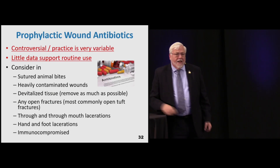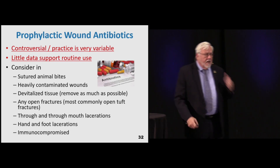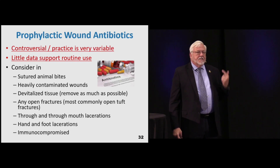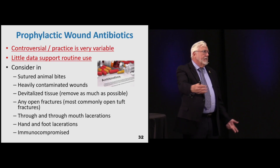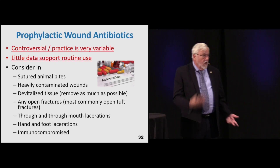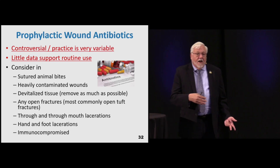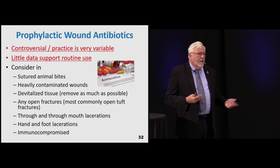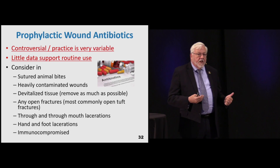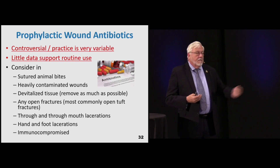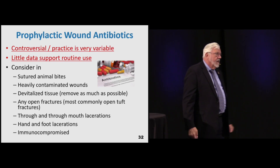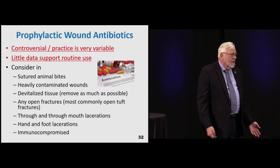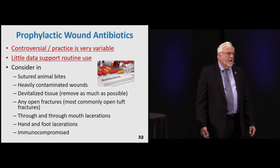Prophylactic wound antibiotics: there's a lot of controversy and variable practice, not a lot of data. Consider antibiotics for: animal bites that you're suturing up, heavily contaminated wounds, devitalized tissue, open fractures such as open tuft fractures, mouth lacerations, hand and foot lacerations, and certainly in immunocompromised patients. In that roof fall case, the patient was on 20 mg of prednisone daily for a rheumatology disease, so in retrospect a fungal infection wasn't surprising.